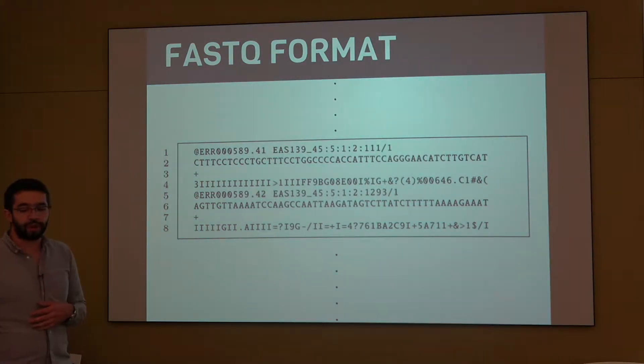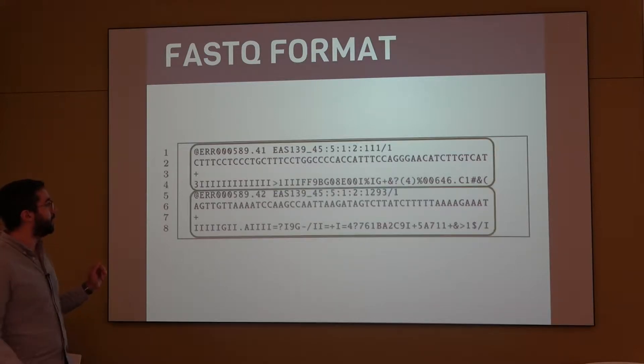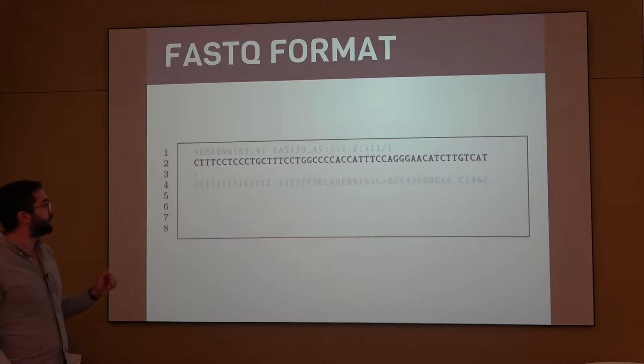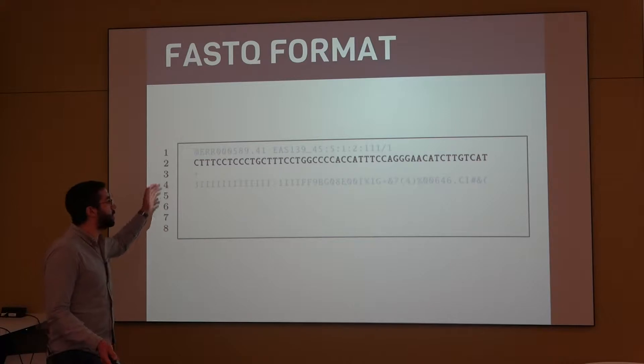When you're working with this, you will receive files with millions and millions of reads of lines in each direction, but one read is going to look more or less like this. Here you have two reads, each one has four lines, and the second line of the read is going to be the DNA sequence that the sequencer identified.